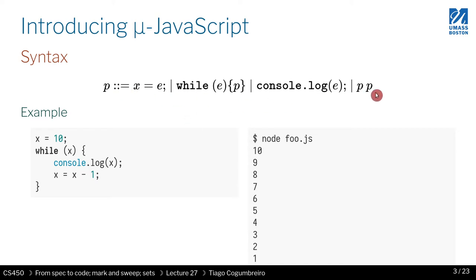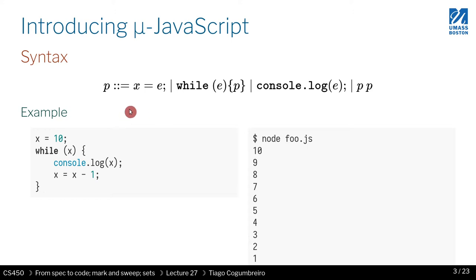This is the only language we have, and with just these four instructions we can already represent some interesting programs. For expressions, I'm going to use the language from homework 3 — just numbers and arithmetic operations: decrement, addition, multiplication, and division. Those are the four operations we define.